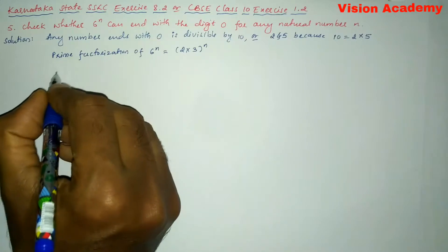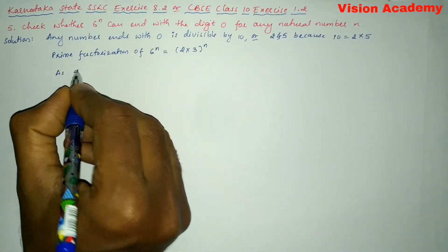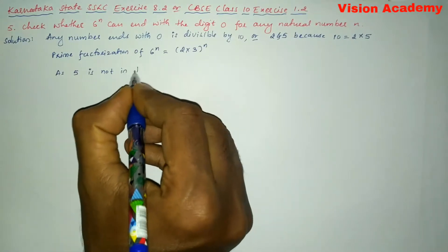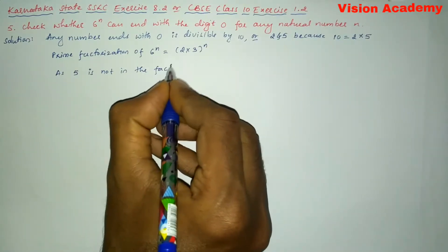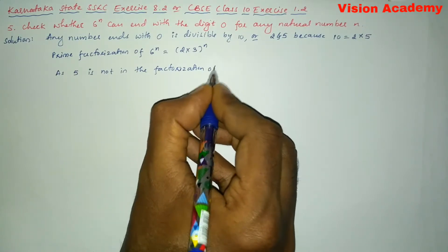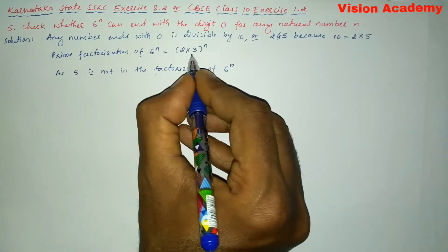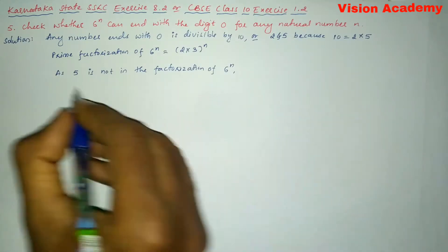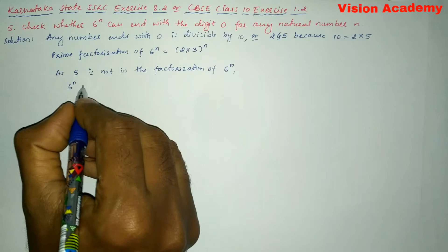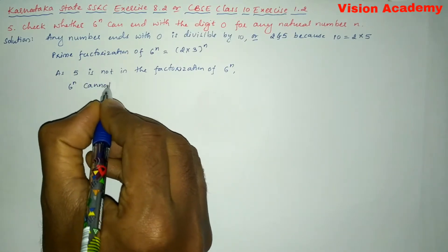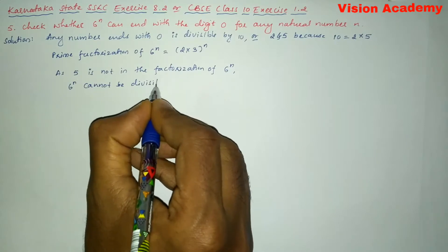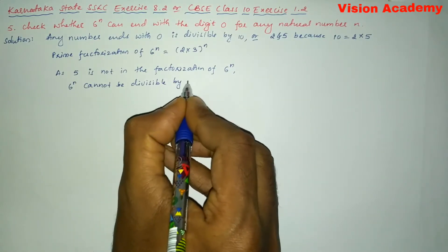Here as 5 is not in the factorization of 6 to the power n because 5 is not present here, we can write 6 to the power n cannot be divisible by 5.